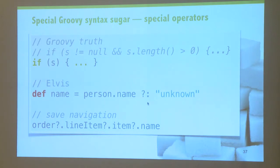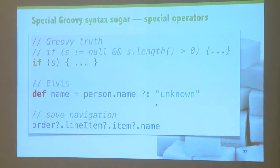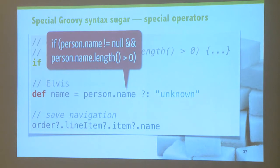The Elvis operator works like this: if person.name is not null and the length is longer than zero — using Groovy truth — that's what we return; otherwise we return a default value. So it's a nice shortcut that also avoids repeating 'person.name' in the ternary variant. Another thing we added is the safe navigation operator. Instead of having nested null checks — if order is not null, if line item is not null, etc. — we do that logic for you: if anything in the chain is null, it returns null. This feature has been copied by Swift on iOS, C# by Microsoft, and CoffeeScript was the first to borrow it.